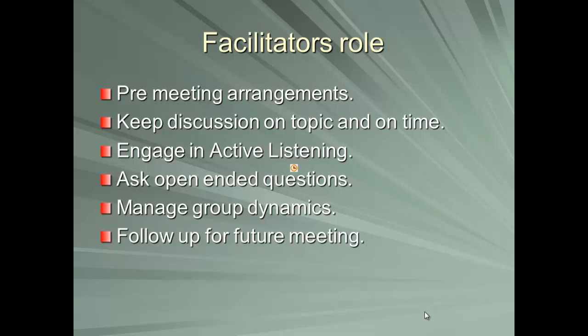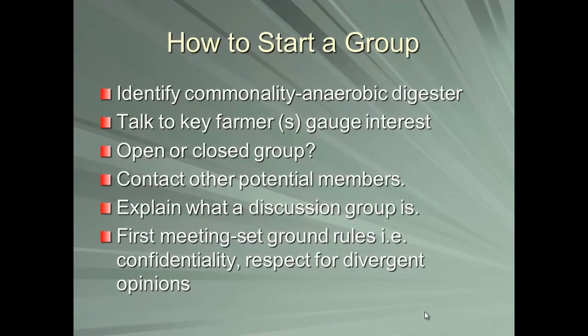If you're interested in starting a group, go to one or two farmers you think would be interested in this concept, get their take on it — would they want to do it? Do this in person so you can see whether they're really interested. Then make your list of producers with that commonality — in this case the AD farmers — go to them, set the stage, let them know it's a discussion, not a workshop or seminar, and follow through from there. Start with a key farmer and build your group from there.